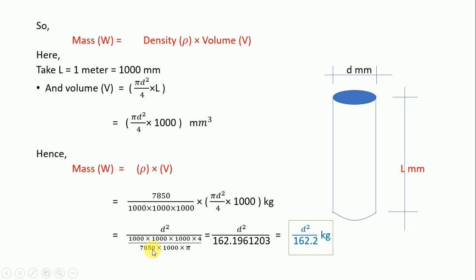...equals d squared by 162.196123, which simplifies to d squared by 162.2 kg. This is for one meter long bar, meaning one meter long bar has weight of d squared by 162.2 kg.